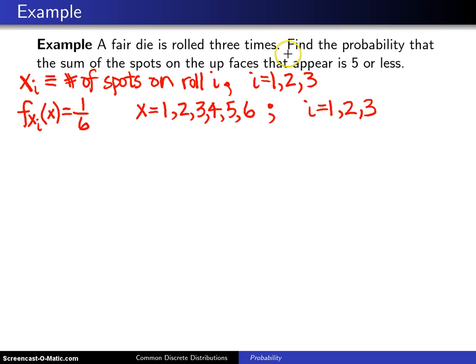The question asks for the probability that the sum of the spots on the up faces is five or less, so we want the probability that X1 plus X2 plus X3 is less than or equal to five. Later in chapter seven we're going to figure out how to do convolutions, that is adding up random variables. For right now we're going to think of the outcome to this a little more geometrically.